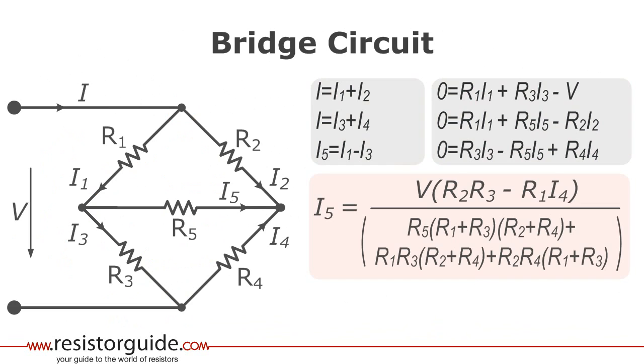What we can learn from this equation is that I5 is zero when the ratio between resistor 1 and 2 is equal to the ratio of resistor 3 and 4.